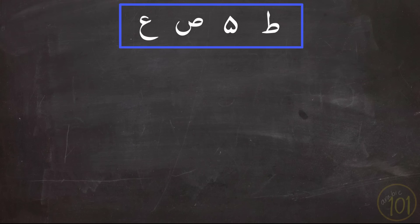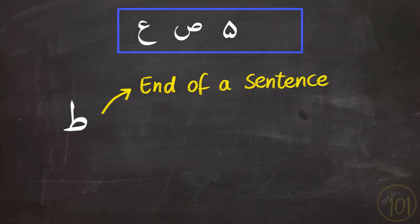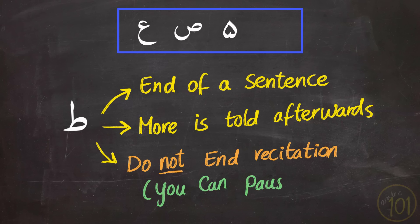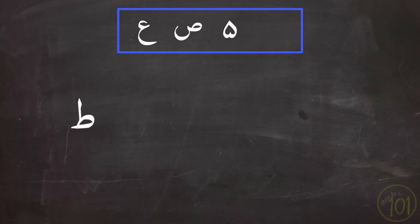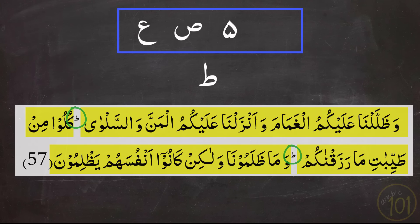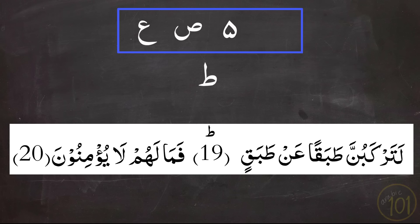Now the set of special symbols. Starting with Ta, which indicates the ending of a sentence — a grammatical marker — but also signals that something related still needs to be told afterwards. So you should not finish your recitation there. In an example, the first sentence ends at the word al-Salwa, but the information that follows is related to what came before. You may pause at these symbols, but you should not end your recitation there since the meaning is yet to be completed. Sometimes Ta also appears on top of the ayah, meaning you should keep reciting to complete the message.